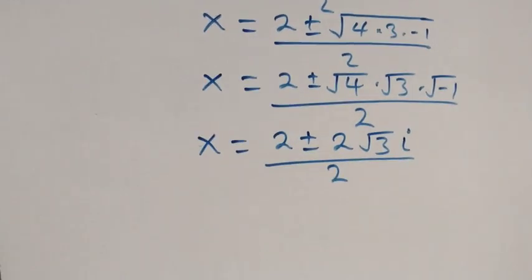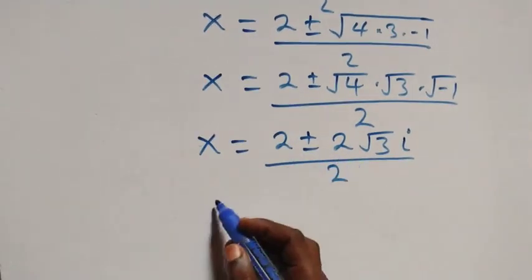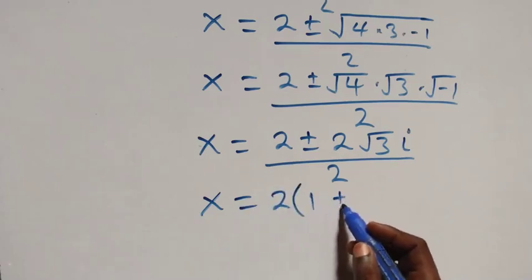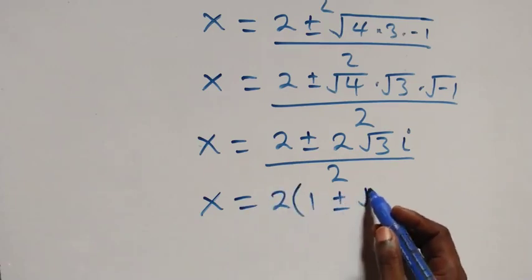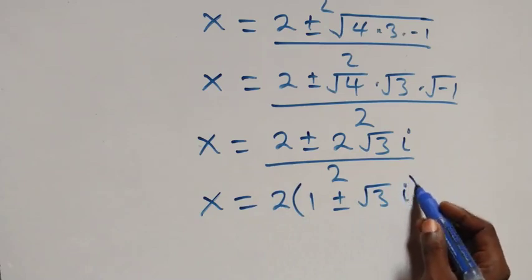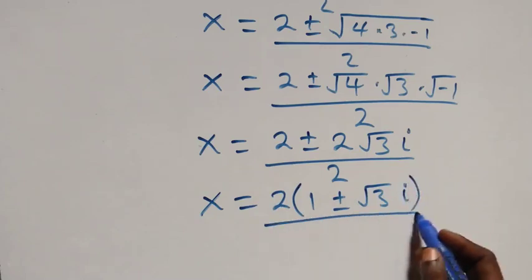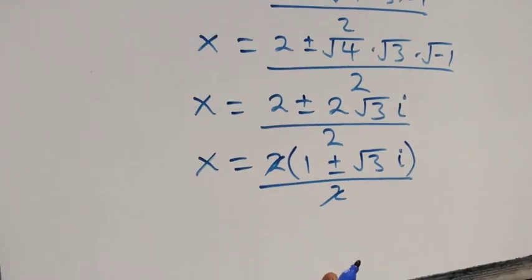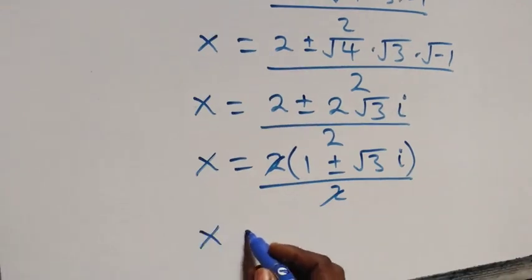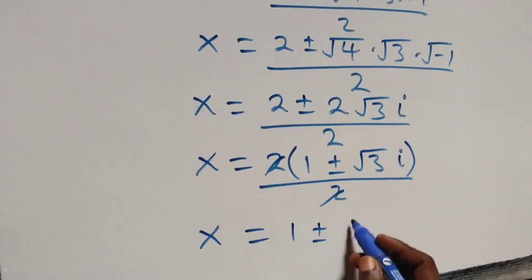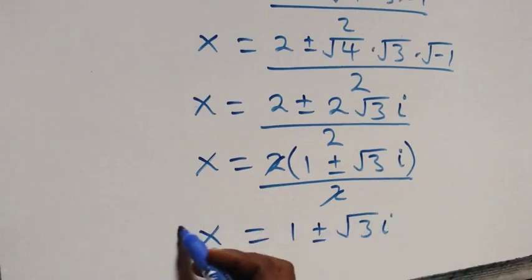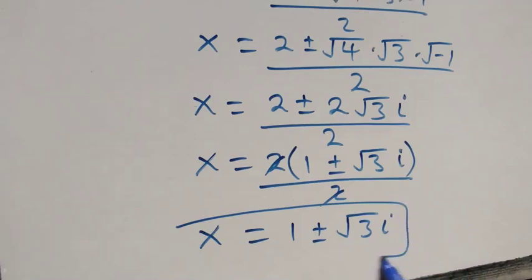From here, 2 is common in the numerator, so x equals 2(1 ± √3·i) over 2. The 2s cancel, and we get x equals 1 plus or minus √3·i. These are two complex solutions from Case 1.